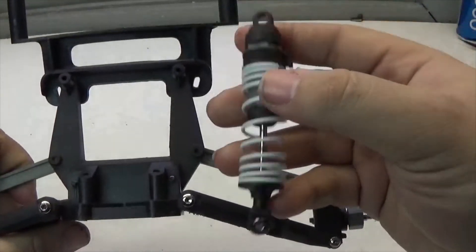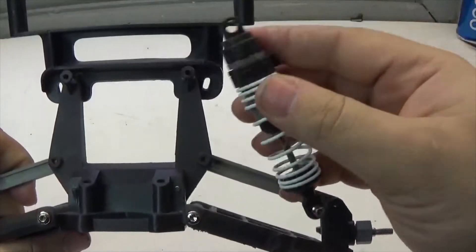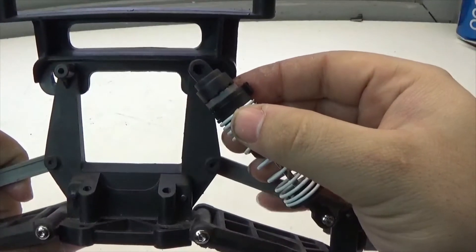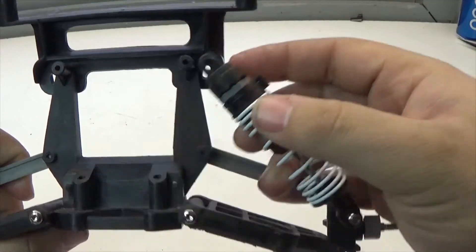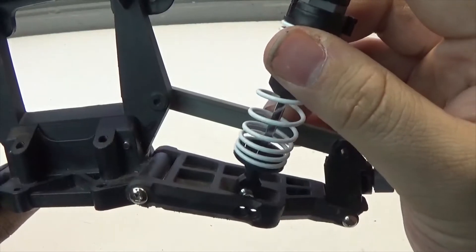Next I'm going to attach the front shocks. The shocks can be held on with two screws: one up at the top with a shoulder screw on the top of the shock tower, and one through this little slot of the a-arm.